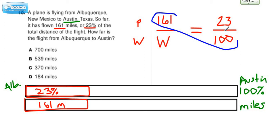So this cross product going this way would be 161 times 100, which would be this. The other cross product going this way would be 23 times W.